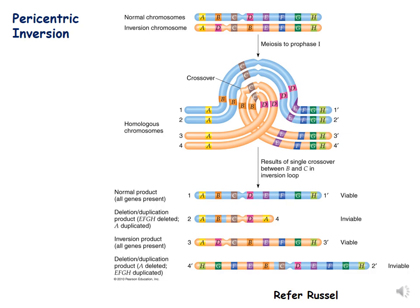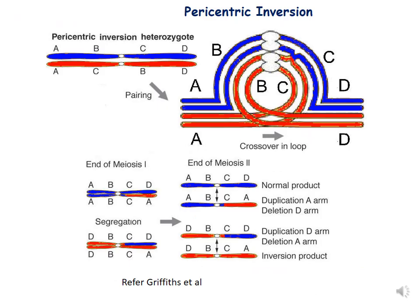So what are the products after pericentric inversion? Two viable products and two inviable products. From Griffiths, these are the two homologous chromosomes — one is normal and another is showing pericentric inversion. The order of the genes in the normal chromosome is A, B, C, D, and the order in the inverted chromosome is A, C, B, D. When bivalent formation occurs, both chromosomes form a loop, and after crossing over, four products are formed: first is normal, the last is the inverted product, and the second and third products show duplication and deletion.